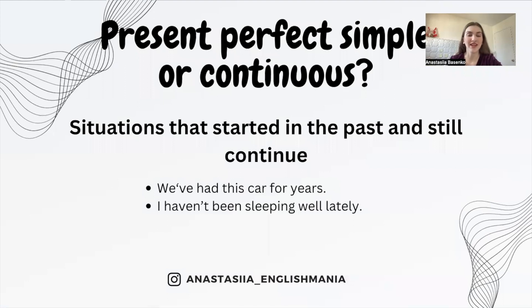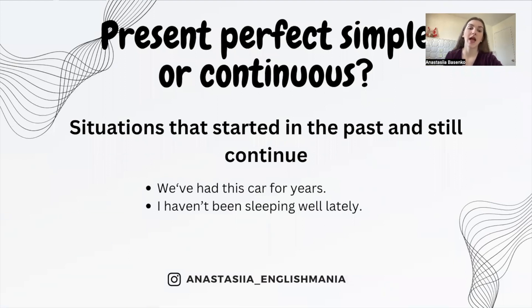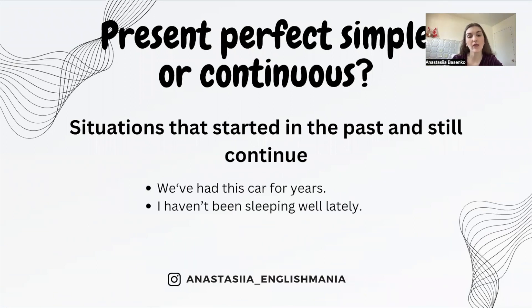For example: 'We've had this car for years.' The verb 'have' is a stative verb, so we use present perfect simple — 'we have had this car for years.' But 'I haven't been sleeping well lately' — the verb 'sleep' is a dynamic verb, so we can use the continuous form.